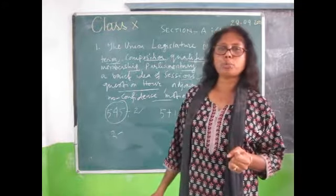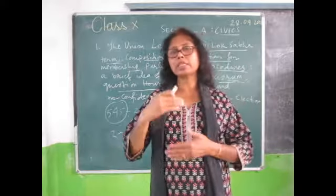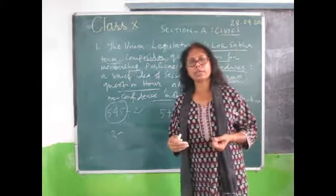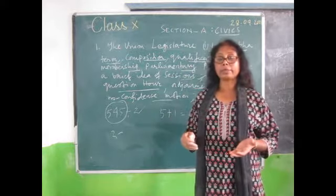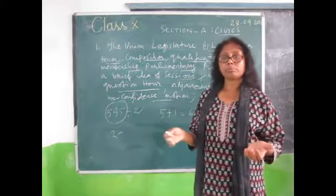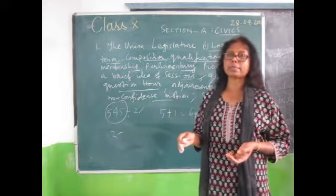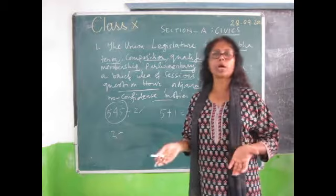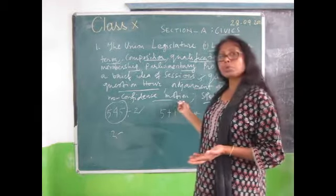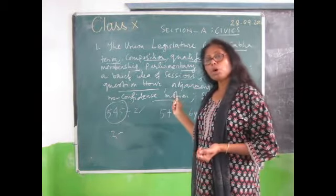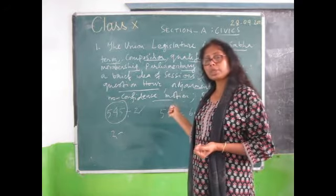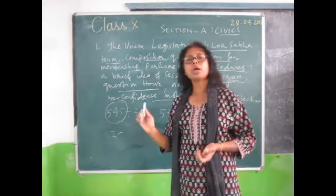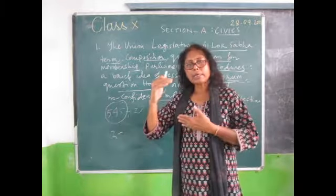Adjournment is the suspension of the house. When can the Speaker adjourn the house? If there is an unruly situation - that means discipline is not maintained - or if there is no quorum, meaning less than 55 members are present when the house session is going on, the Speaker can adjourn the house. Regarding no confidence motion - if the motion passes with the opposition, the government has to resign.